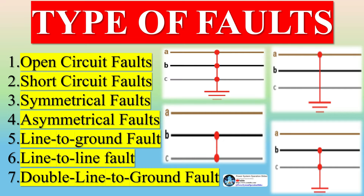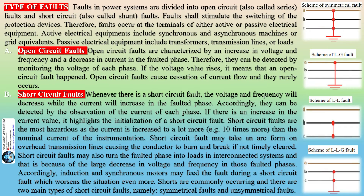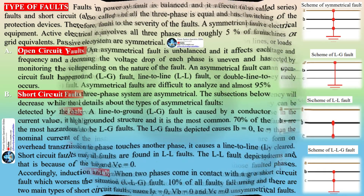Faults in power systems are divided into open-circuit faults (also called series faults) and short-circuit faults (also called shunt faults). Faults shall stimulate the switching of protection devices. Therefore, faults occur at the terminals of either active or passive electrical equipment. Active electrical equipment includes synchronous and asynchronous machines or grid equivalents, while passive electrical equipment includes transformers, transmission lines, or loads.